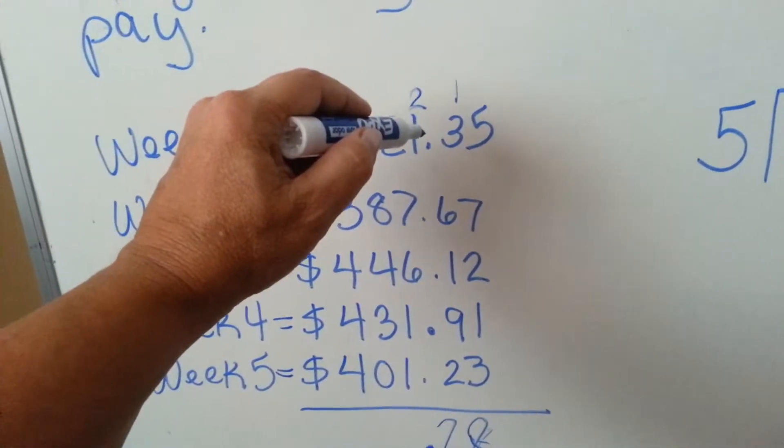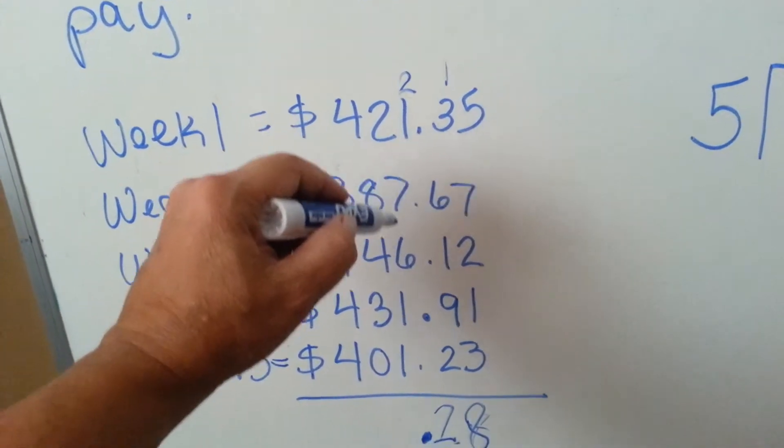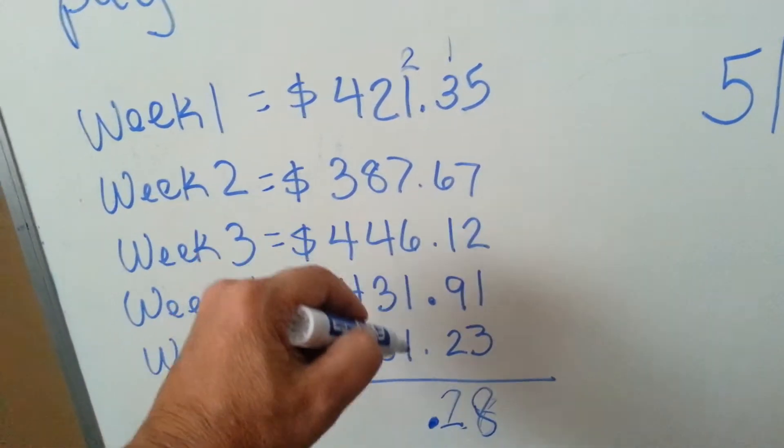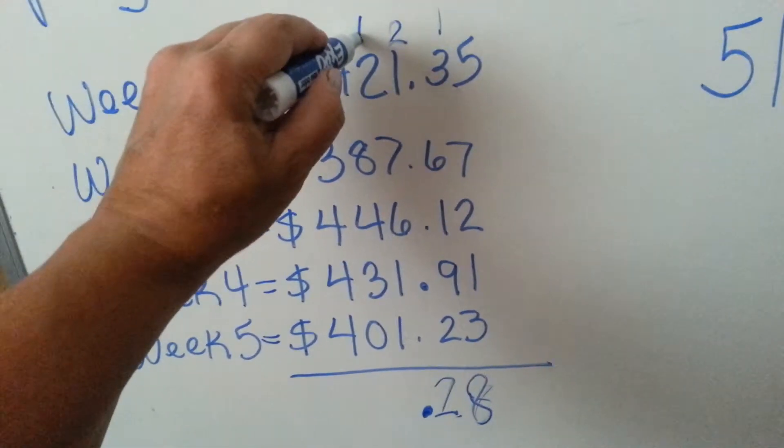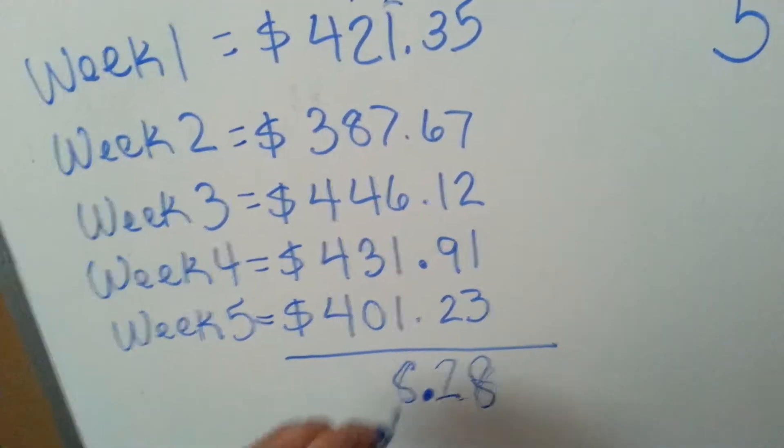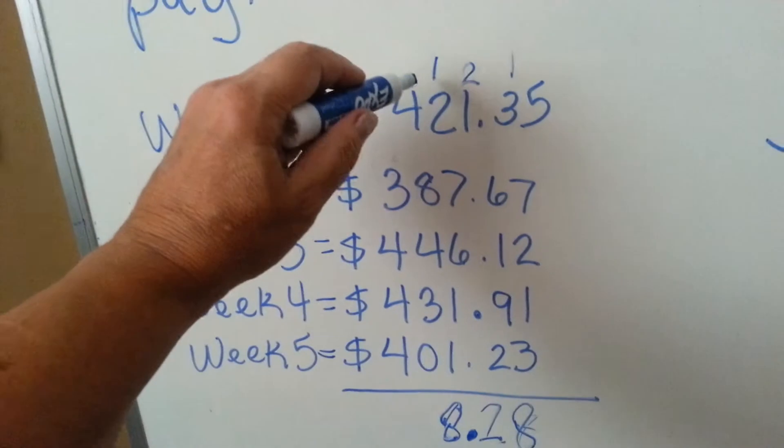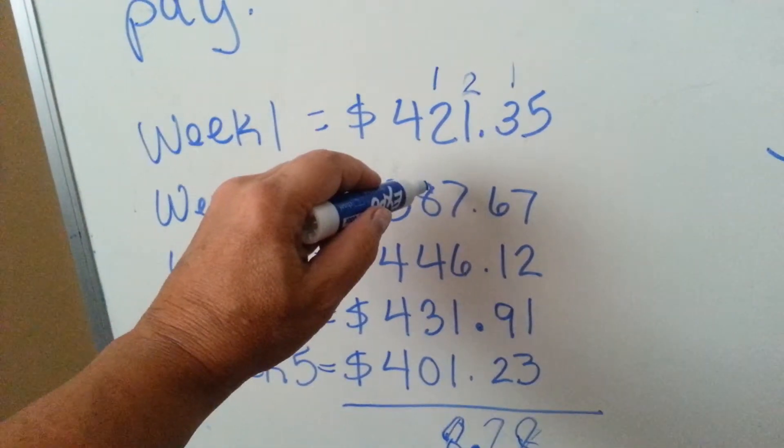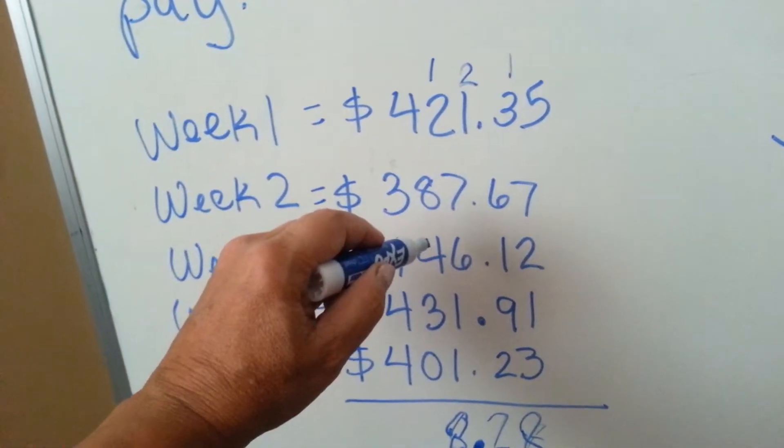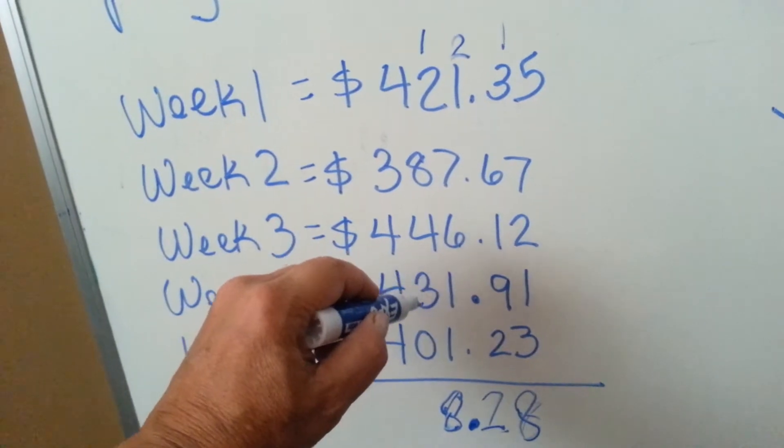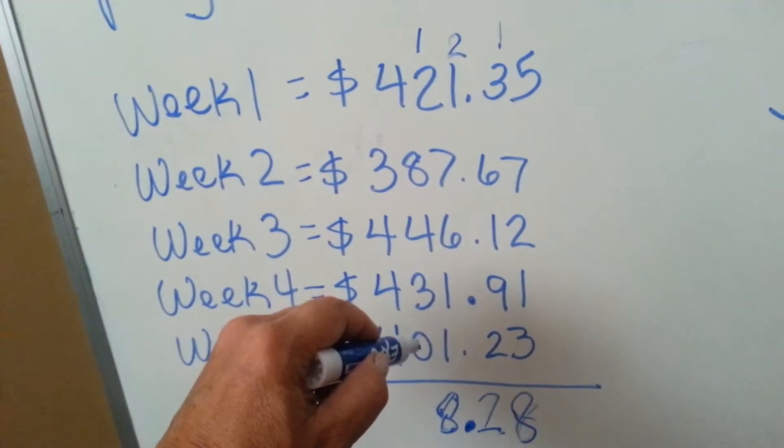2 and 1 is 3, and 7 is 10, and 6 is 16, 17, 18. We're going to carry the 1 and put the 8 down. 1 and 2 is 3, and 8 is 11, and 4 more is 15, 16, 17, 18. We're still at 18 because of the 0.